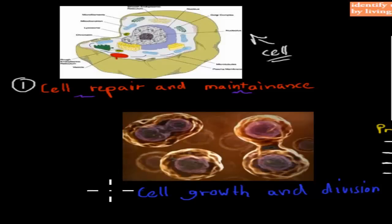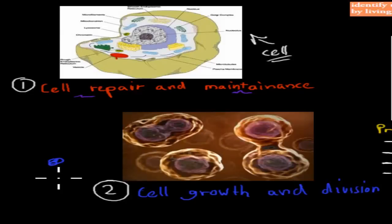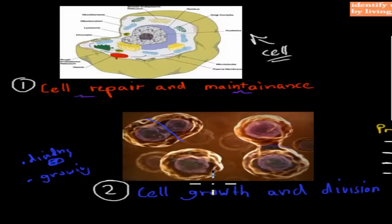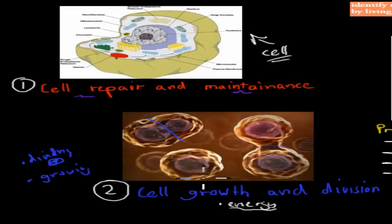Another reason is cell growth and division. Cell growth means that cells start smallish but can grow in size, and that requires energy. Cells also divide and make new ones — you can see here we have one cell that starts dividing into two cells, and that requires lots of energy. We have billions of cells in our body, and many of them have to be replaced every day — millions and millions of times.